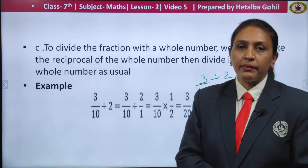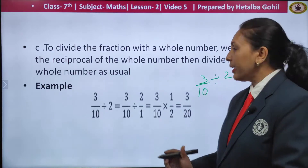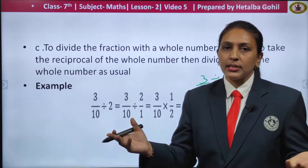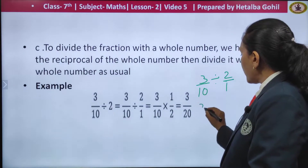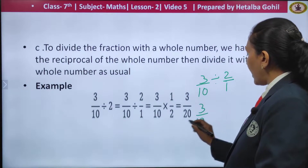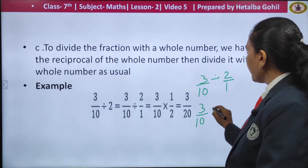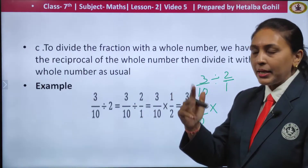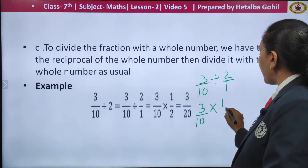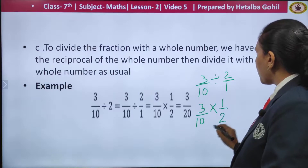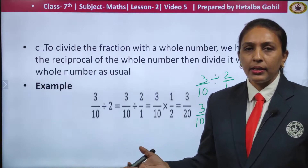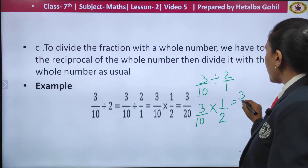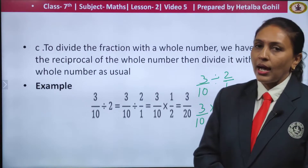Whenever you do not have any denominator children, take it as 1. The process remains the same — do not change the first part: 3 upon 10 as it is. Change the sign to multiplication and flip the number that is the second part. 2 by 1 will become 1 by 2. Now multiply the numerators and denominators, you get 3 by 20 as your answer.